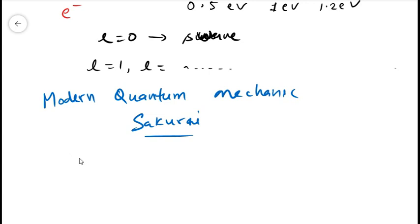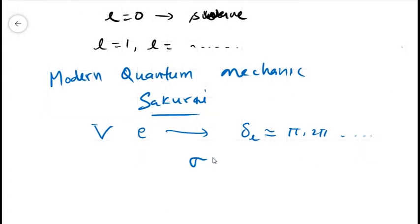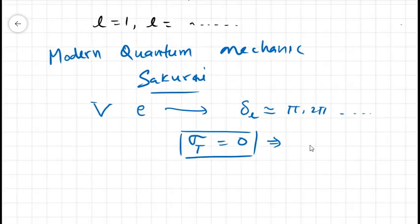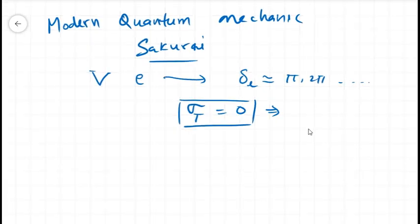So, if the strength of the attractive potential, in this case the potential of the xenon atom, and the energy of the incoming electrons is such that the phase shift is some integral multiple of π, then σ, that is the total cross section, will be 0. And that implies no scattering. And if we further increase the energy of the electrons, the probability of the scattering also increases.